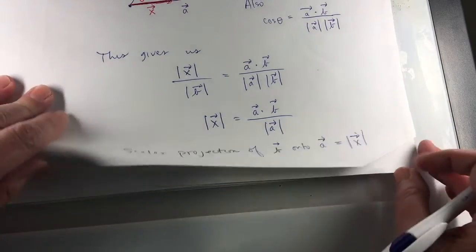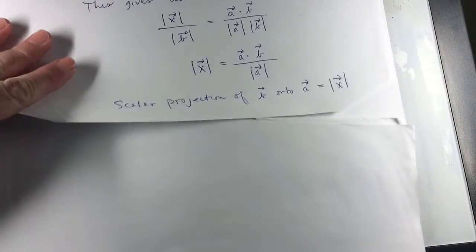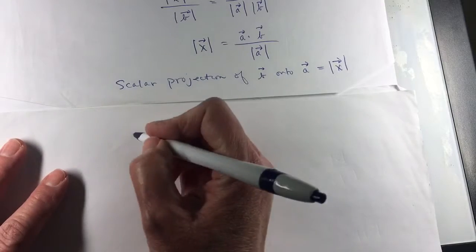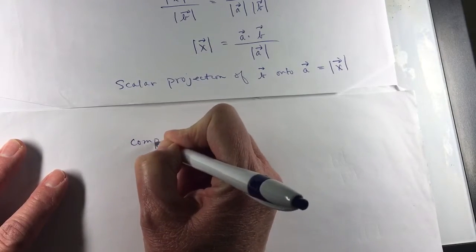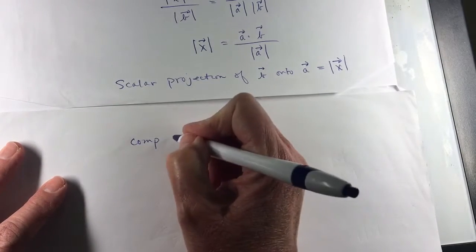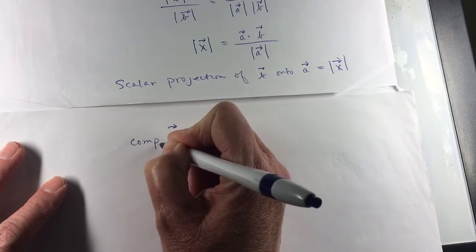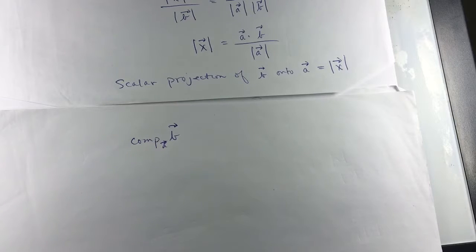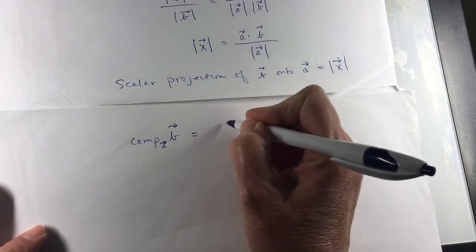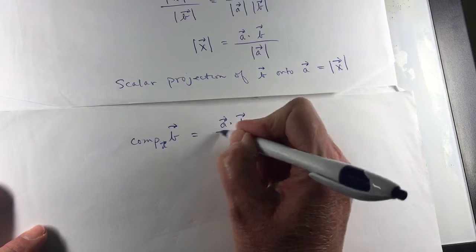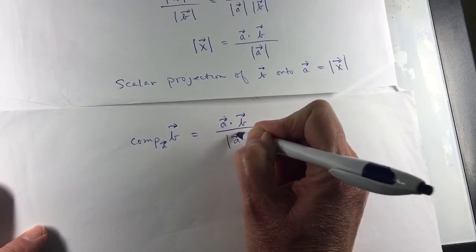They didn't call it vector X in the book. They called it the component of vector B onto vector A, written as vector B with vector A as a subscript, and that equals vector A dotted with vector B divided by the magnitude of A.